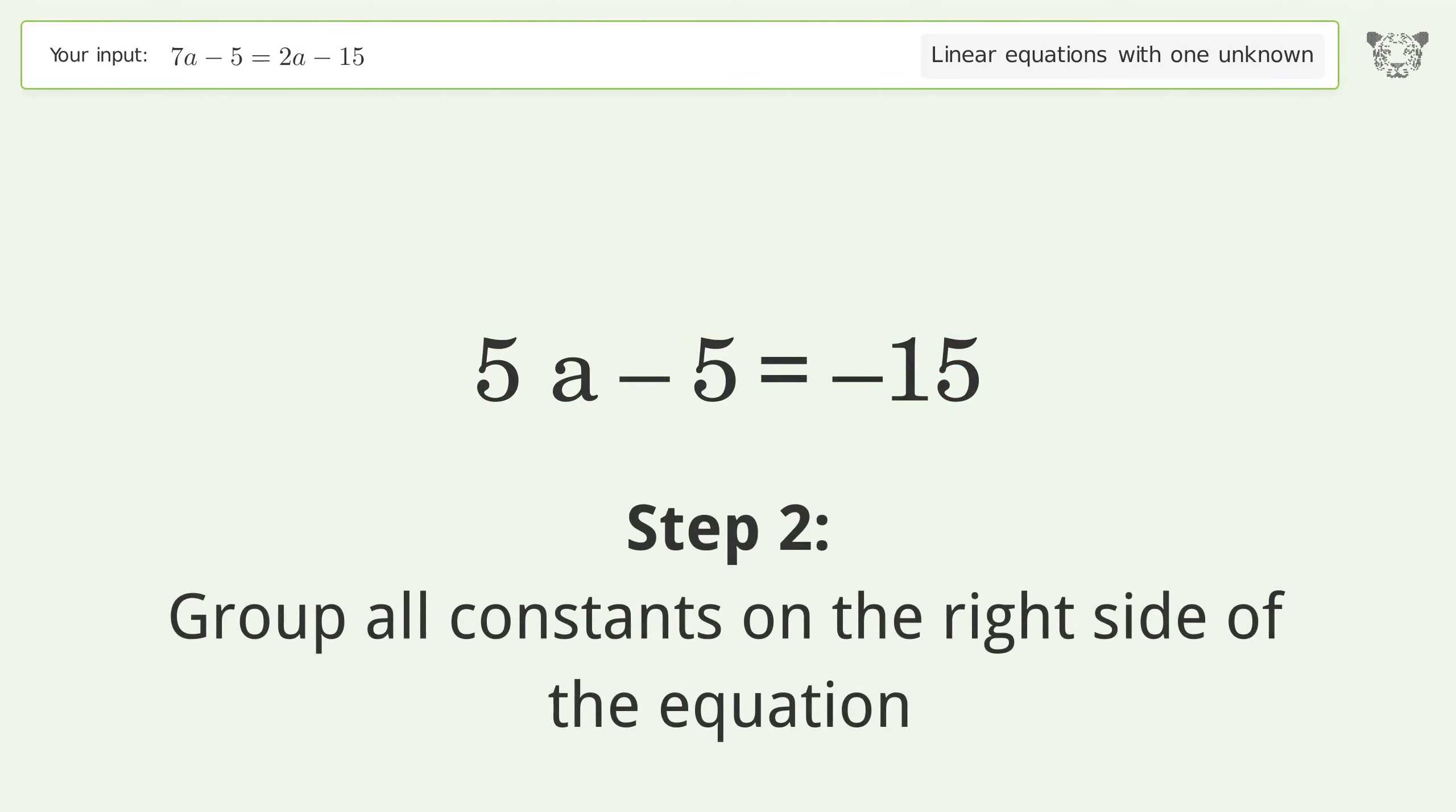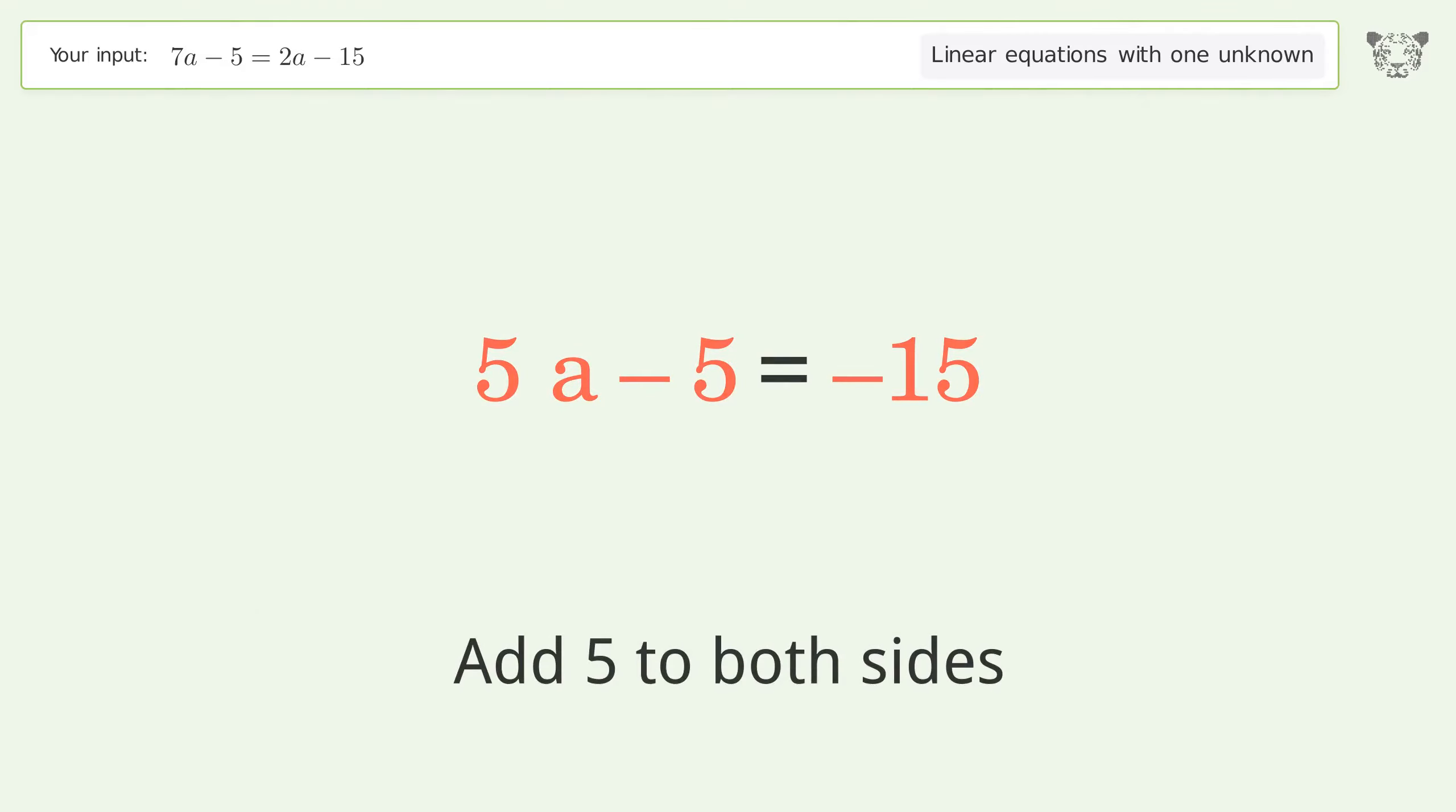Group all constants on the right side of the equation. Add 5 to both sides. Simplify the arithmetic.